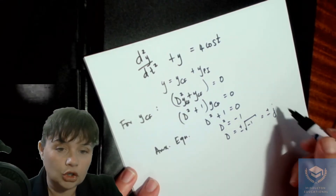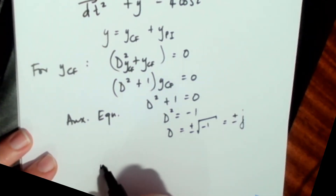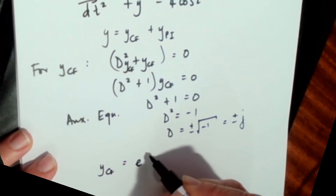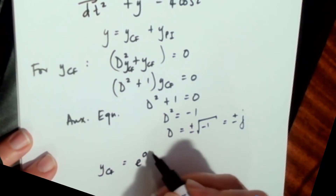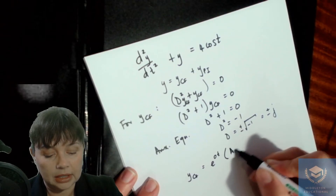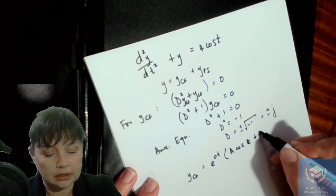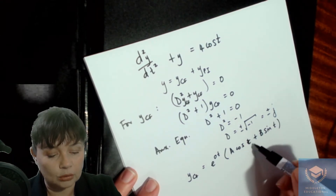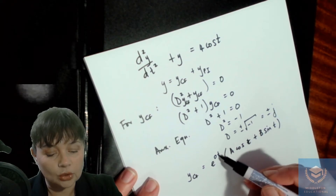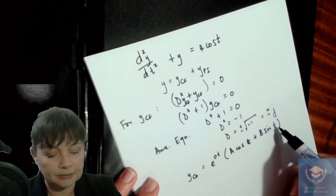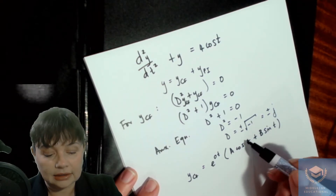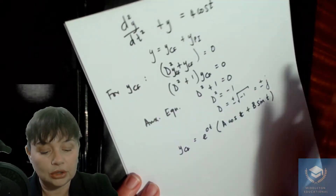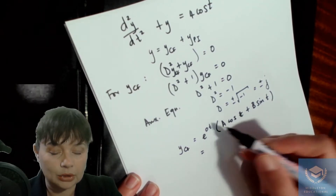That means because you have a complex root here, you know that your complementary function has to have the form of e to the power of the real part times t, multiplied by (a cos t + b sin t). The real part in this case is zero, so e to the power nought is just one. And remember, your independent variable has to appear in the arguments of cos and sine — in this case that's t, not x, like I almost wrote.